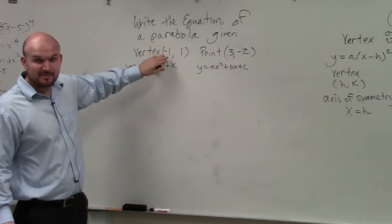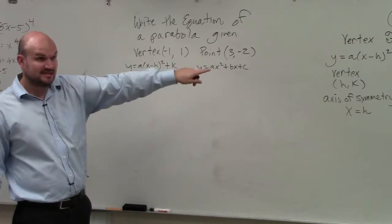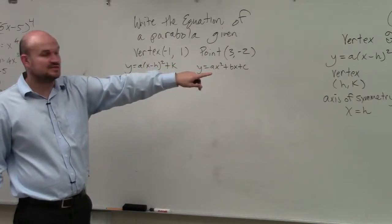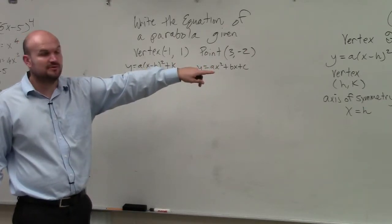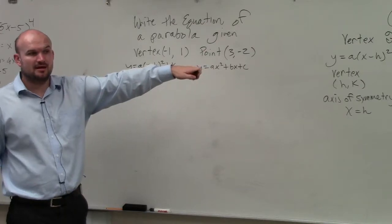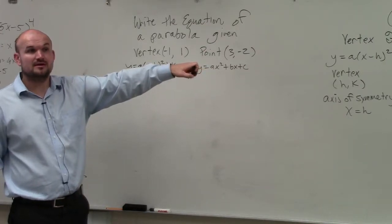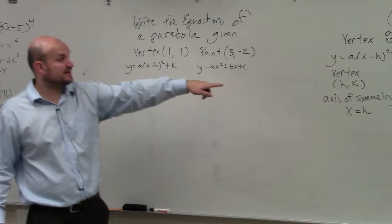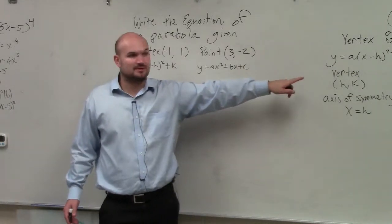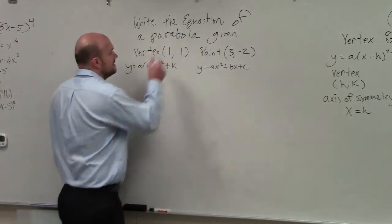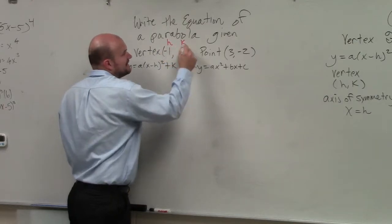Well, we're given the vertex. And if you remember, the vertex is represented with two variables. What are those? Yes, they are shifts. But what do we use to represent them? Which variables? H and K. So we can say this is my H, and that's my K.